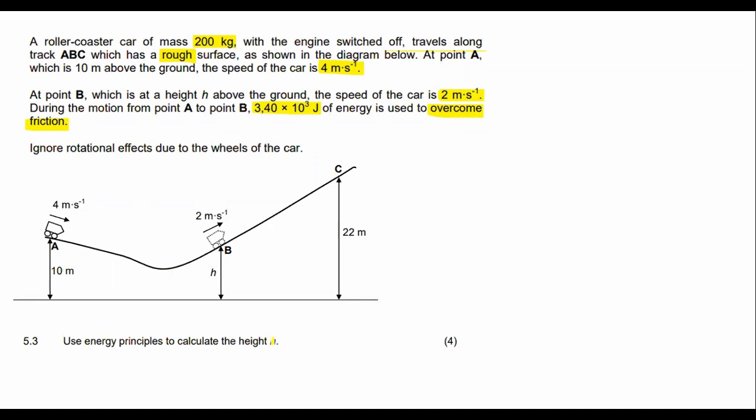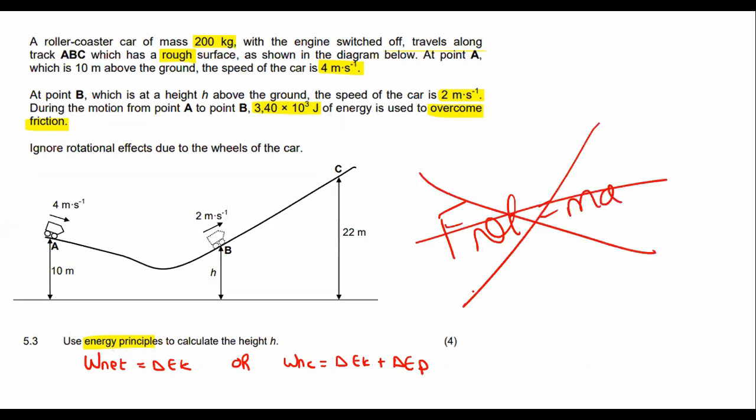Use energy principles to calculate the height. Now when they say energy principles, you have two different options: you've got W_net equals ΔEK, or you could use W_nc equals ΔEK plus ΔEP. That is what energy principles stands for. What you can't do is F_net equals ma—that is not an energy formula, so don't use that one when they say use energy principles.